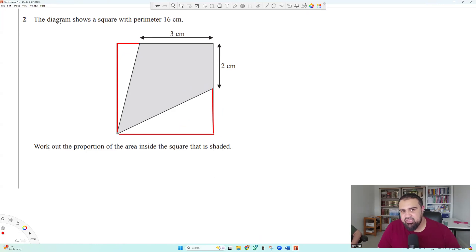First thing, what does it say? The diagram shows a square with a perimeter of 16 centimeters. Now, one thing you need to know about a square, that all sides are the same. So what is 16 divided by 4? 4. So we know each side is going to be 4 centimeters. So this bit here must be 1 centimeter, correct? And this whole bit here is 4 centimeters.